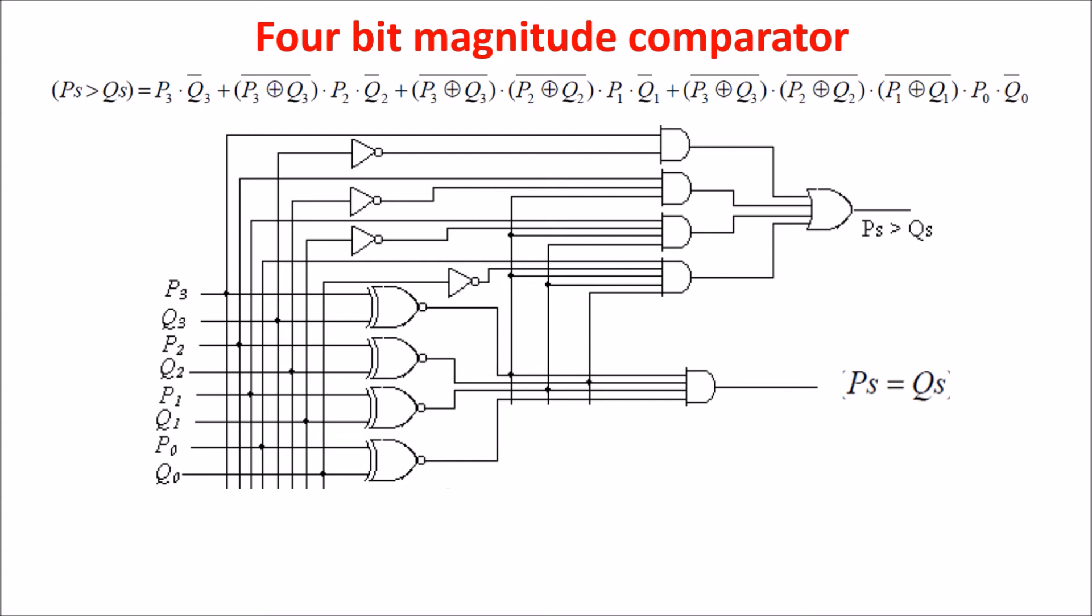So here you see the circuit to detect P equals Q and P greater than Q. For example, the first condition is met if P3 is 1 and Q3 is 0. In this case the output of the XNOR is 0 because the inputs are different.